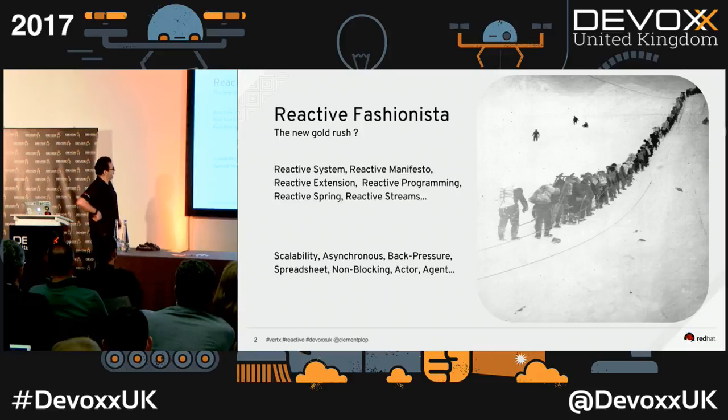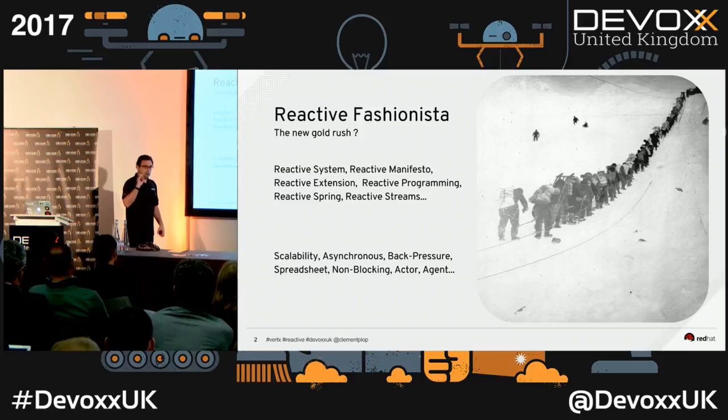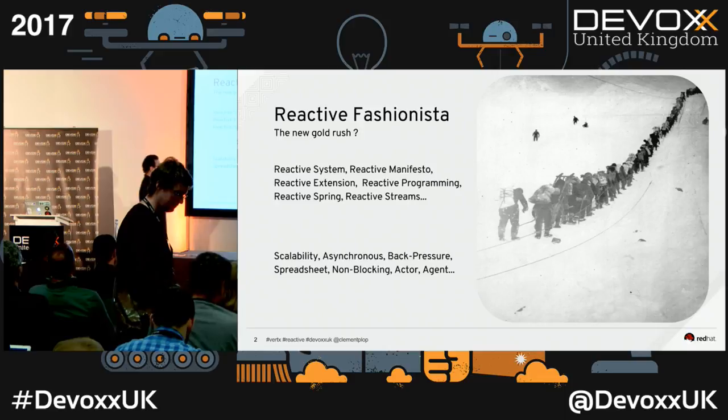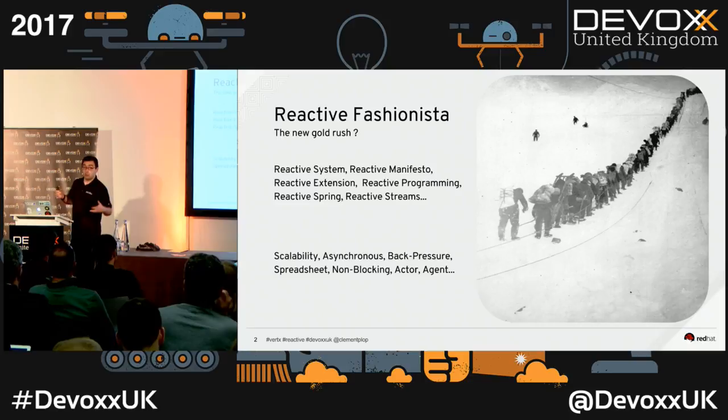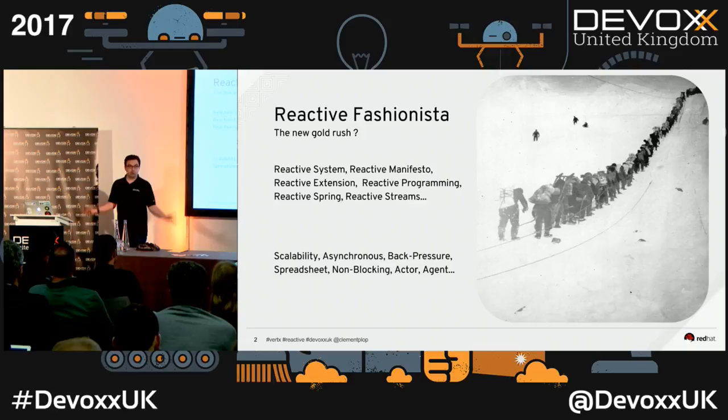Do all those reactive things mean the same thing, or are they different? Just to make everybody really confused — we associate reactive with scalability, non-blocking IO, event loop, asynchronous, back pressure, agents, actors, and even spreadsheets. So this whole world is really starting to be confusing.